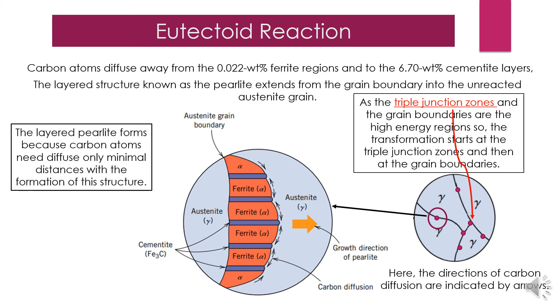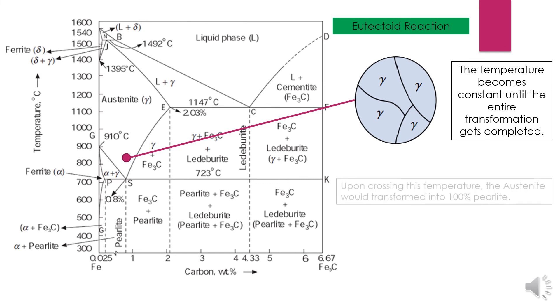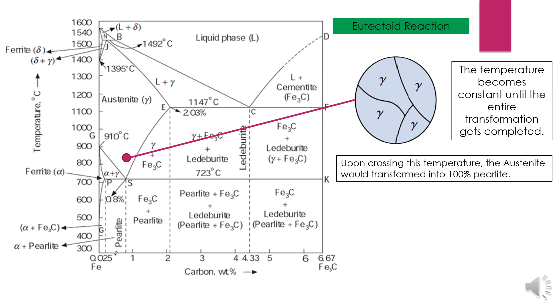The temperature now becomes constant until the entire transformation gets completed. Upon crossing this temperature, the austenite will transform into 100 percent pearlite.